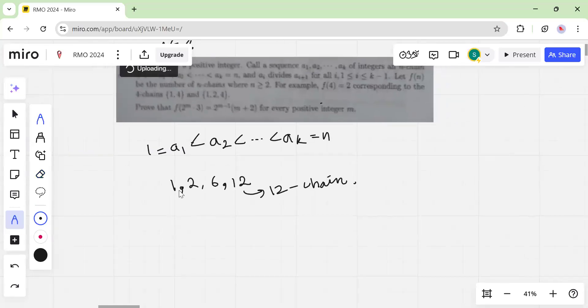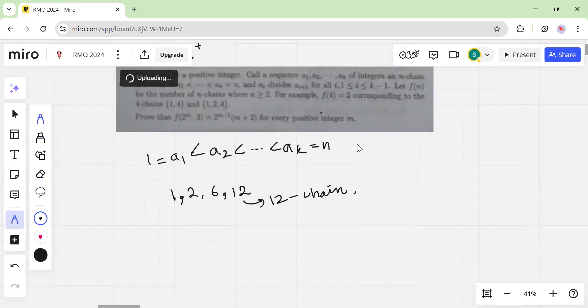Okay, so as you can see, usually the way we'll define such a chain is somewhat inductive in a sense. So like you define a chain till ak minus 1 and then you add an ak which is a multiple of ak minus 1. So it makes a lot of sense in this problem to do something like if ak is equal to n, then ak minus 1 can be any divisor of n, any factor of n.